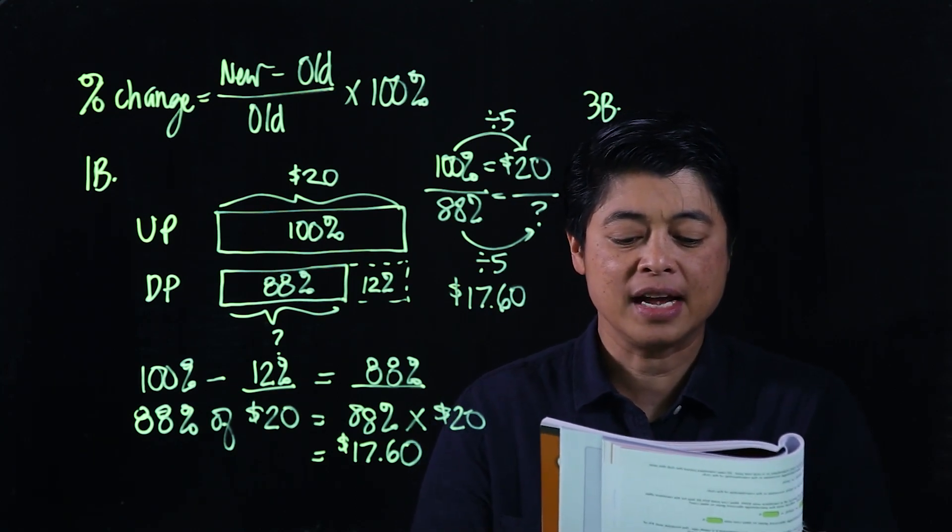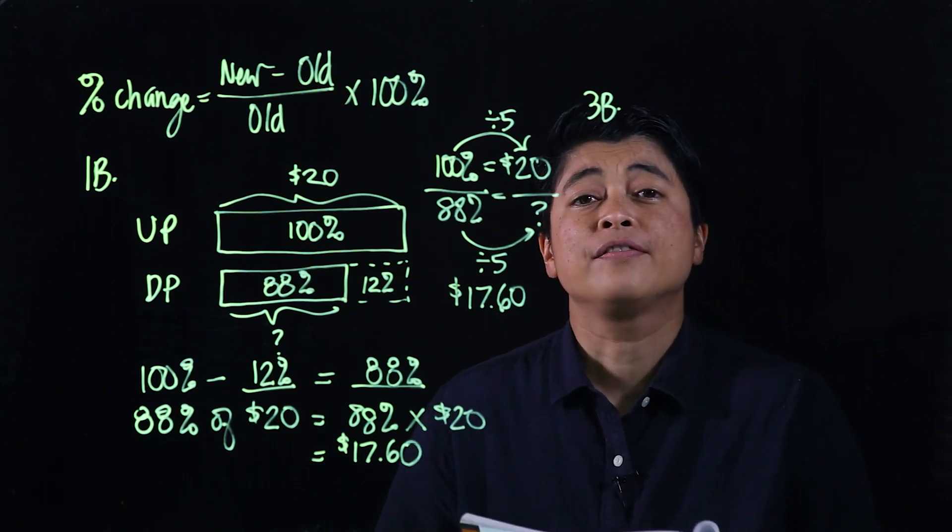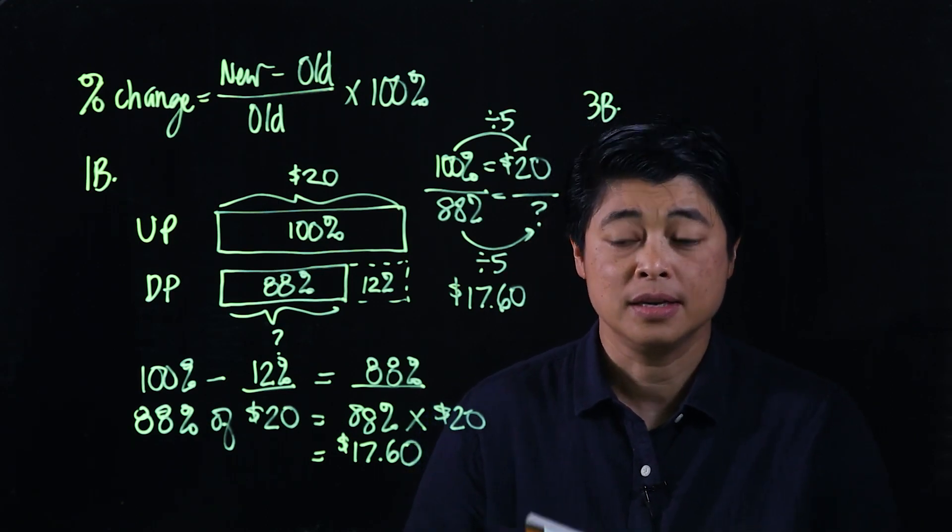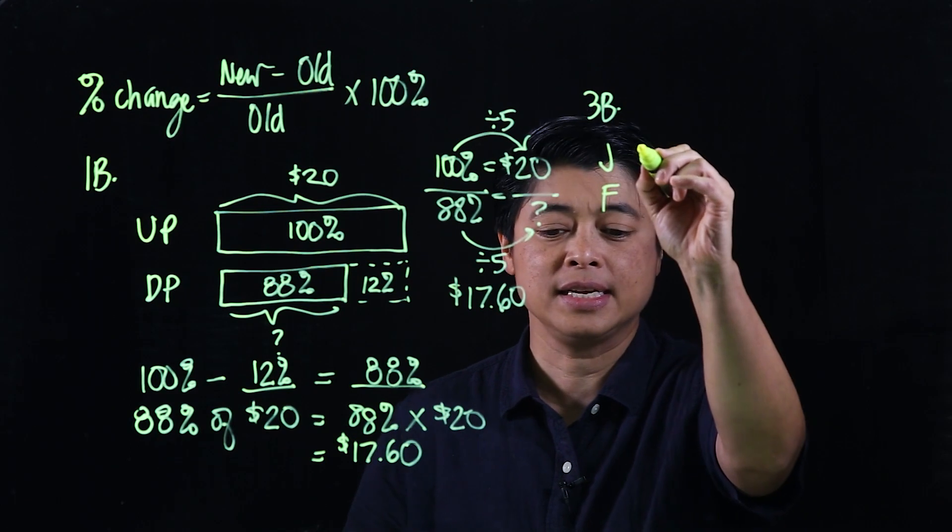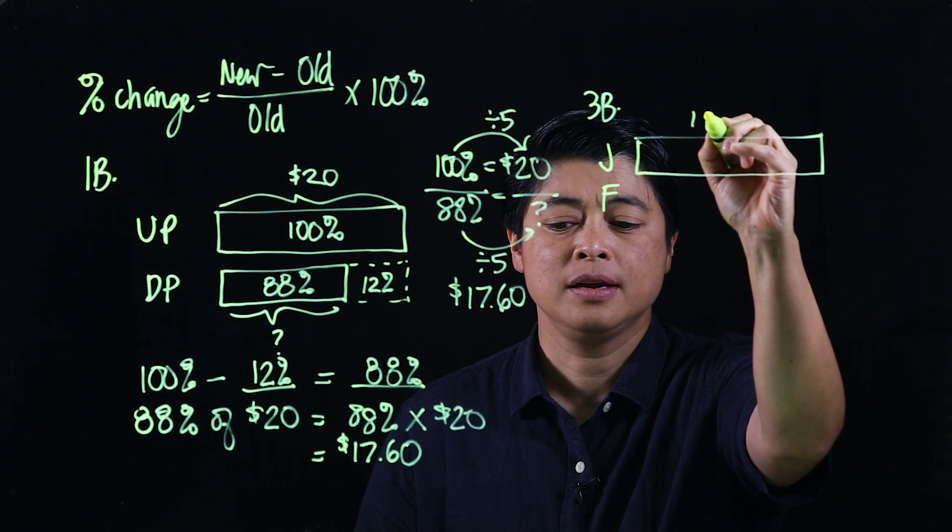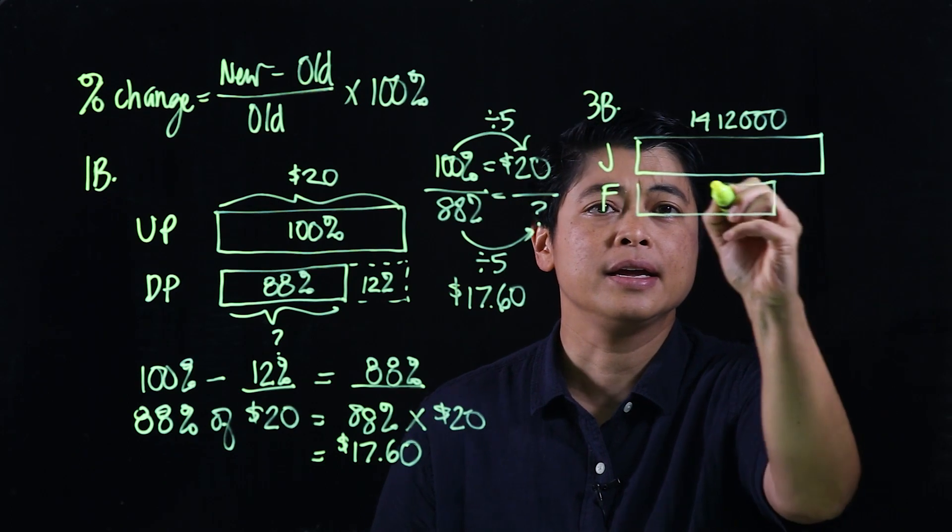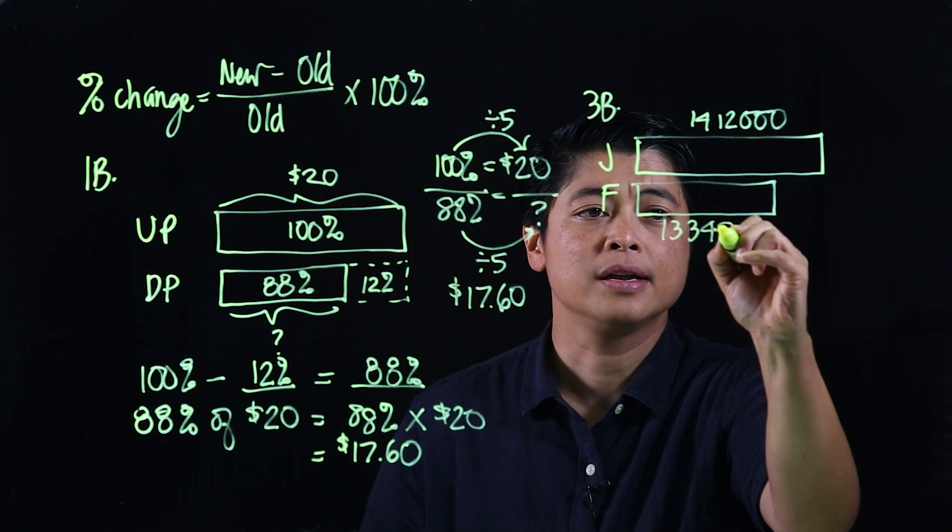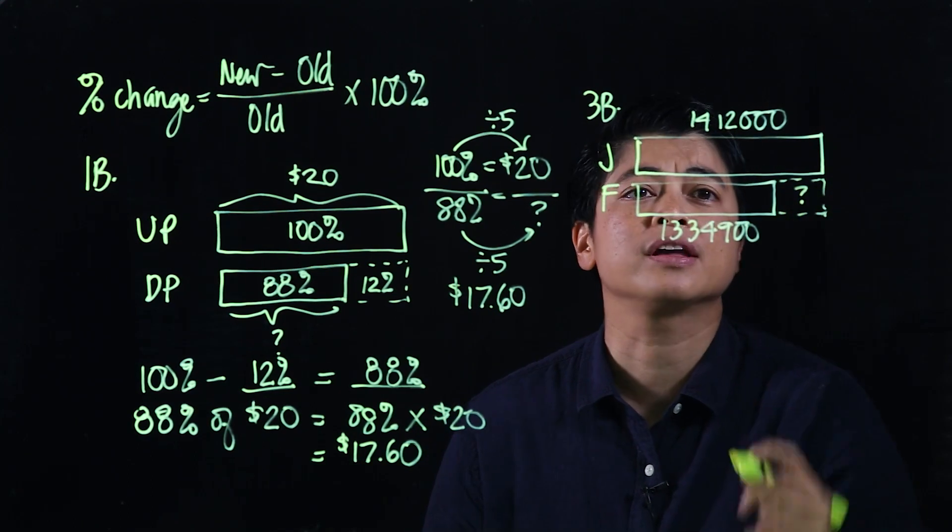And it says give your answer to the nearest whole number. So which means when we're looking for the value in the calculator, we need to round to the nearest whole. Okay, so which means this is January, this is February. Okay, so this in January is 1,412,000. In February it's 1,334,900. Okay, so what it wants is the percent decrease. So that's technically what we're looking for.